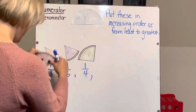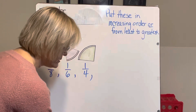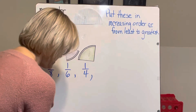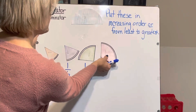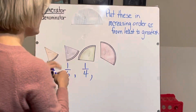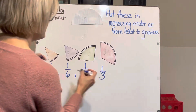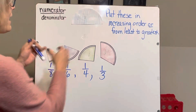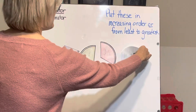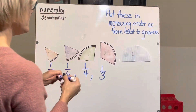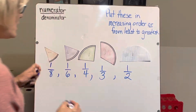And then one half would be the greatest, or the largest piece of the whole. So the final order from least to greatest is: one eighth, one sixth, one fourth, one third, one half.